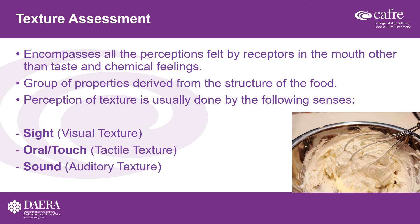Texture assessment encompasses all the perceptions felt by receptors in the mouth other than taste and chemical feeling. It is a group of properties derived from the structure of food, and perception of texture is usually done by the following senses: sight for visual texture, touch for tactile texture, and sound for auditory texture. For example, an orange skin has visual and tactile roughness compared to an apple skin, and a crisp's crispness is perceived in the mouth by both tactile and auditory perception.